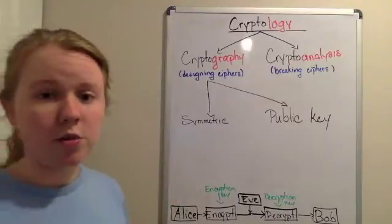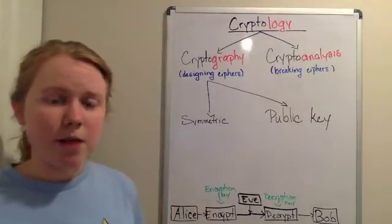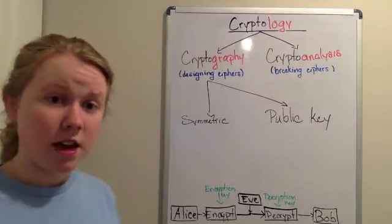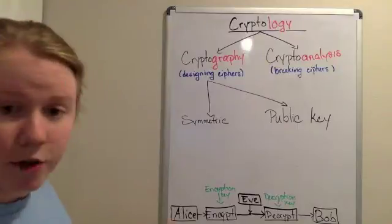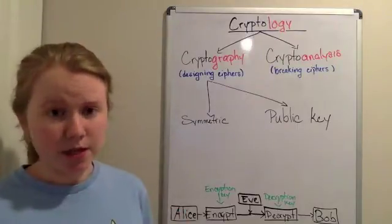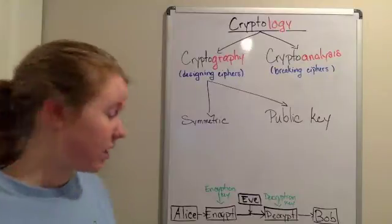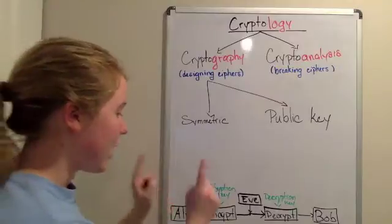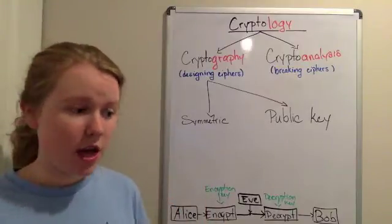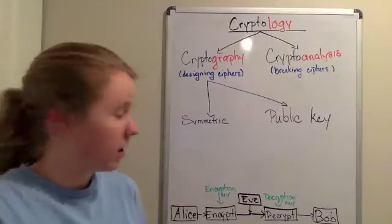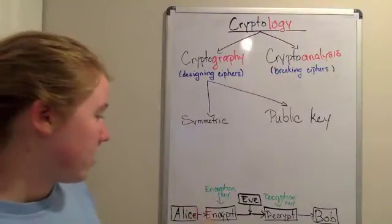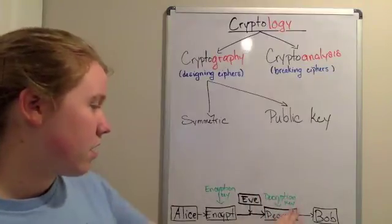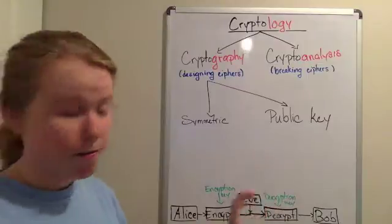Before we can talk about those, we have to outline some of the main characters that are used to define these ideas. If we go down here at the bottom, we have our character, Alice. Alice wants to send a message. So, what she has is she has an encryption key. Alice has an encryption key and she encrypts the message. She turns her message into something nobody else can read, theoretically.